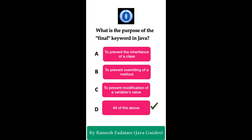The correct answer is option D: all of the above. We use the final keyword to prevent the inheritance of a class — once we create a class with the final keyword, we cannot extend that class. We also use the final keyword to prevent the overriding of a method; once we create a method with final, we cannot override that method in a subclass.